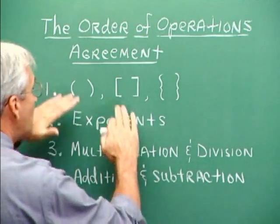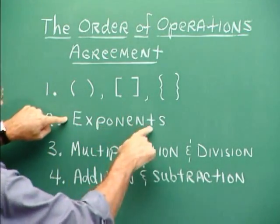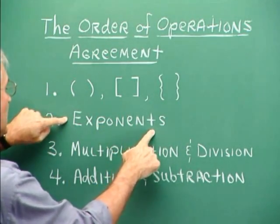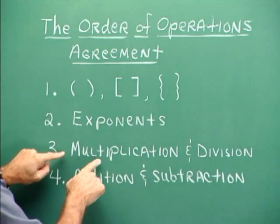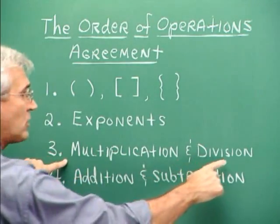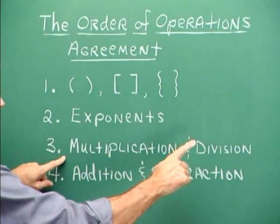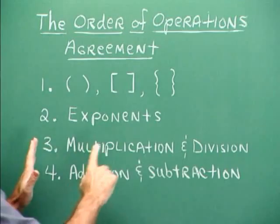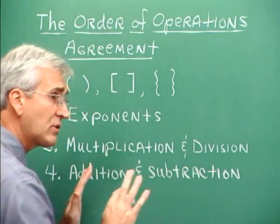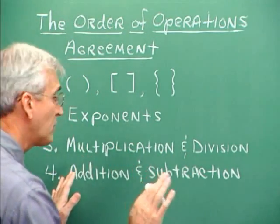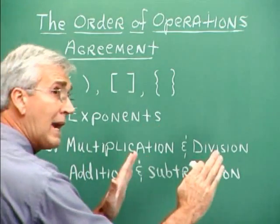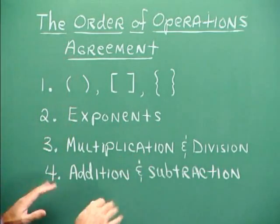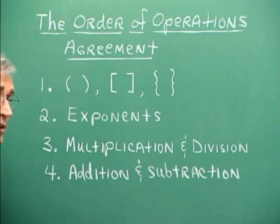The next thing we do, the next priority is to take care of exponents that appear in the expression. And after that, we perform any indicated multiplication or division from left to right. Now, the multiplication and division don't take precedence over one another. It's whichever one occurs first from left to right in the expression. And then after that, we take care of addition and subtraction.